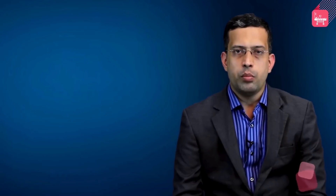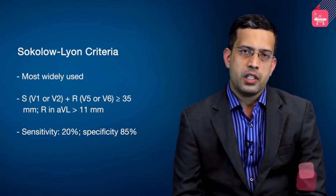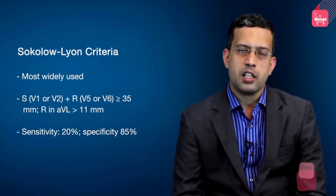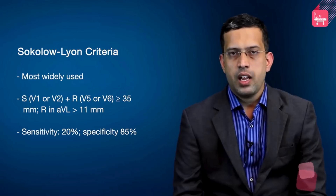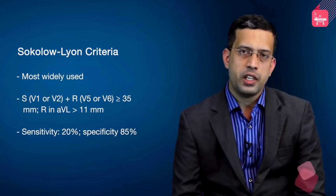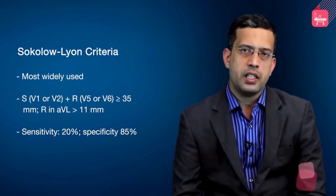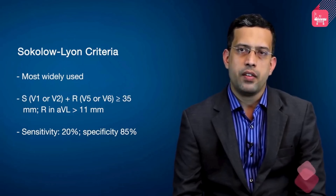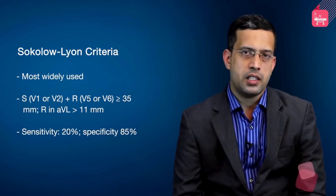The most commonly used LVH voltage criterion is the Sokolov-Leon criterion. It takes the sum of the S wave in V1 or V2 combined with the R wave in either V5 or V6, and if this sum exceeds 35 mm, it is considered diagnostic of LVH. The other Sokolov-Leon criterion uses the R wave alone in lead AVL — if it exceeds 11 mm, it is considered diagnostic of LVH.